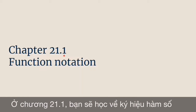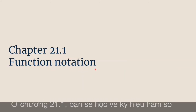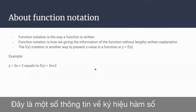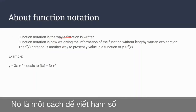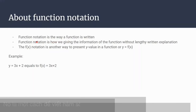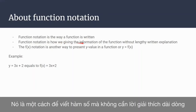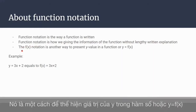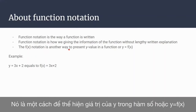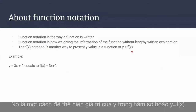In chapter 21.1, you study about function notation. This is some information about function notation. It is the way for a function to be written. Function notation is how we give the information of a function without lengthy written explanation. The f(x) notation is another way to present the y value in a function, or y is equal to f(x).